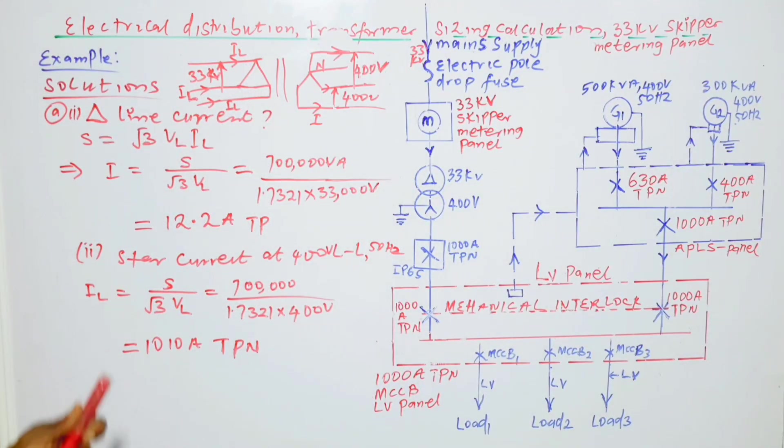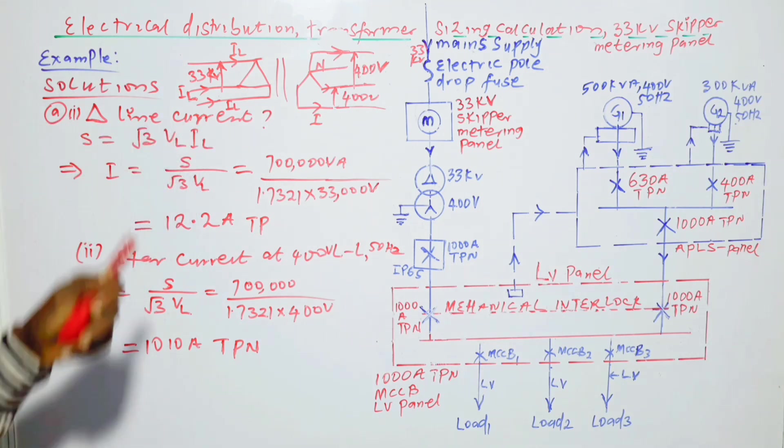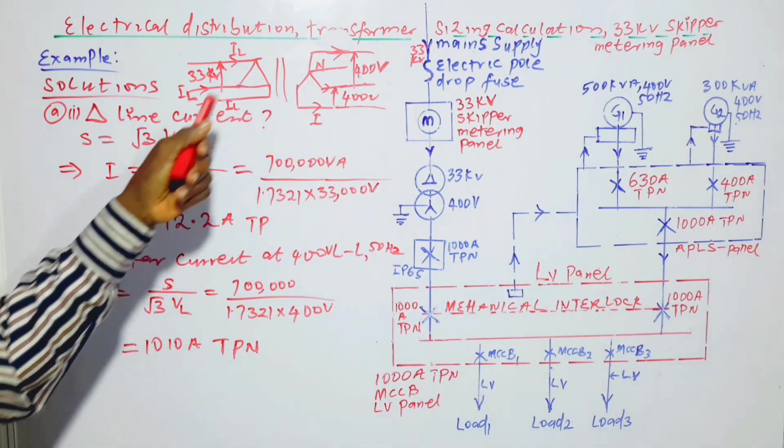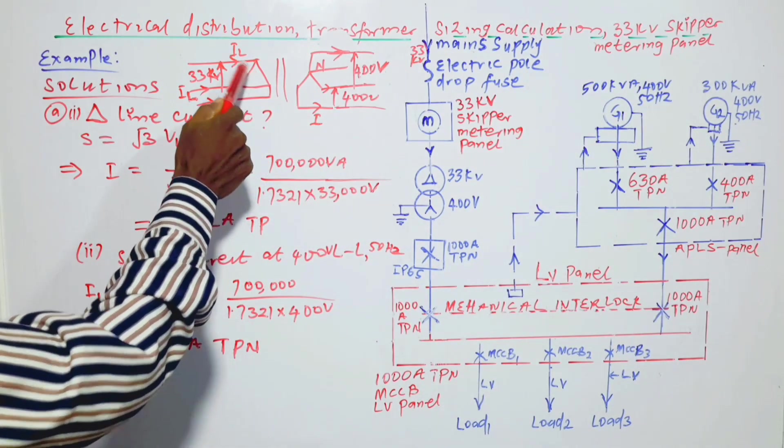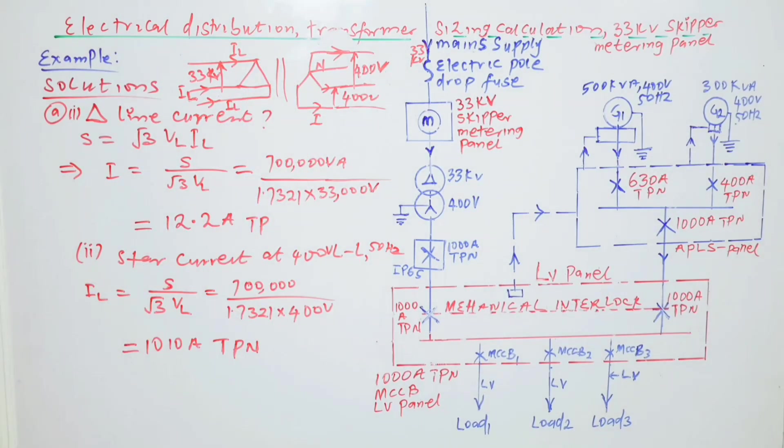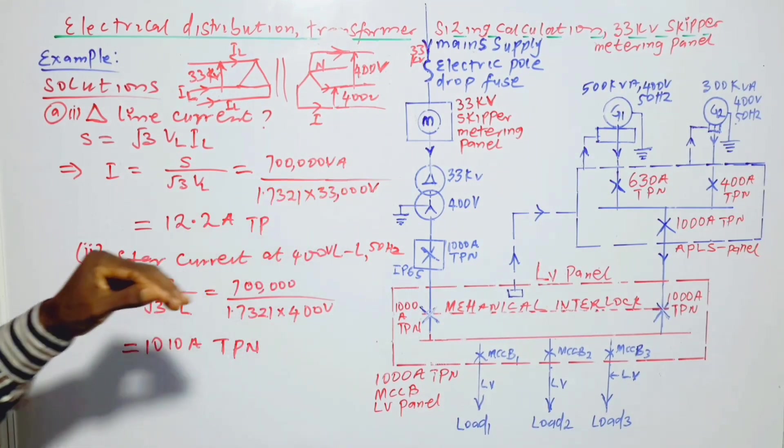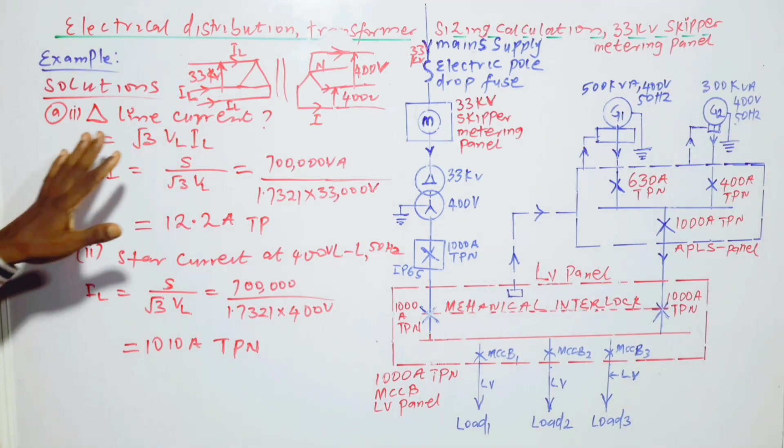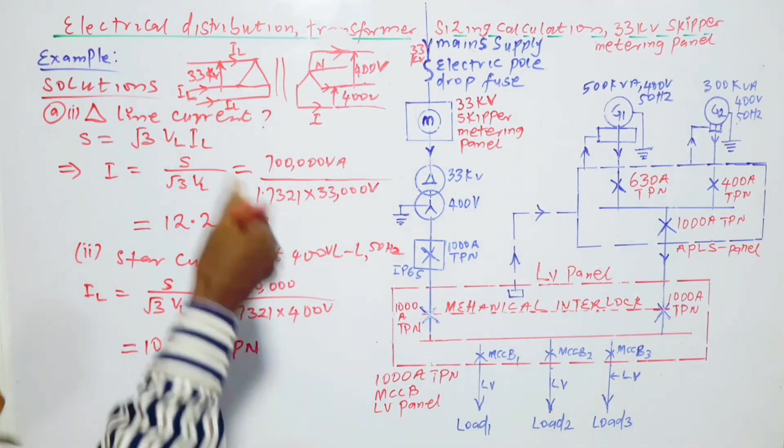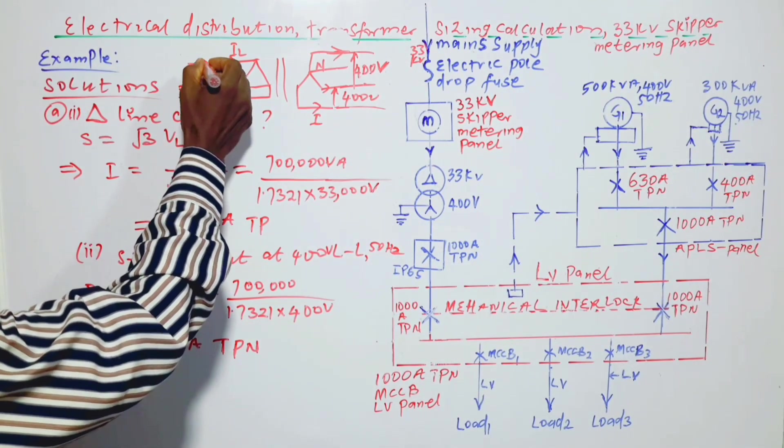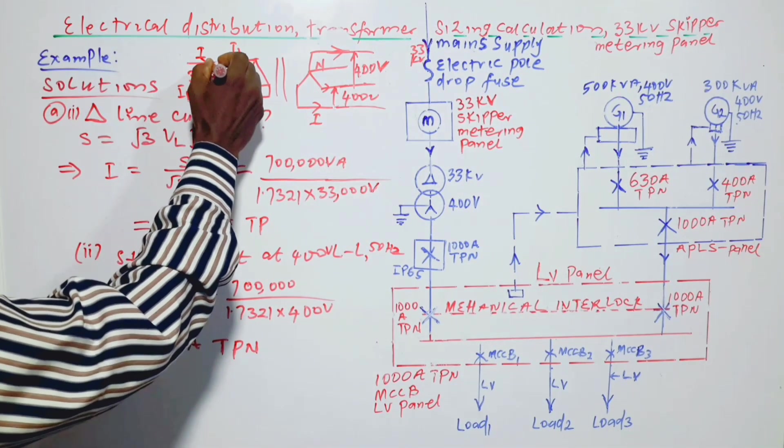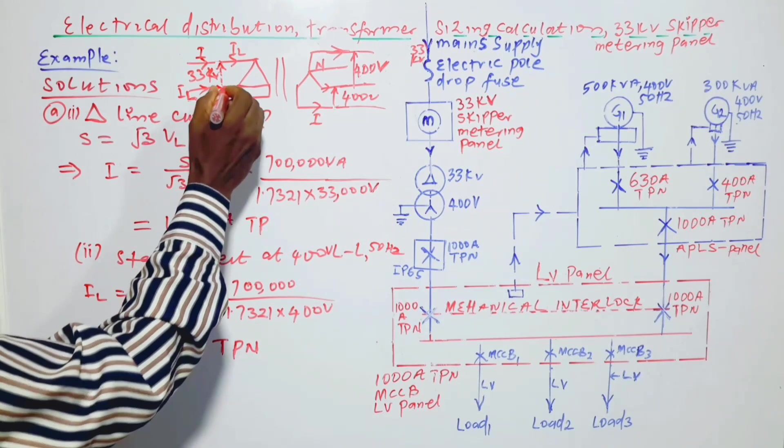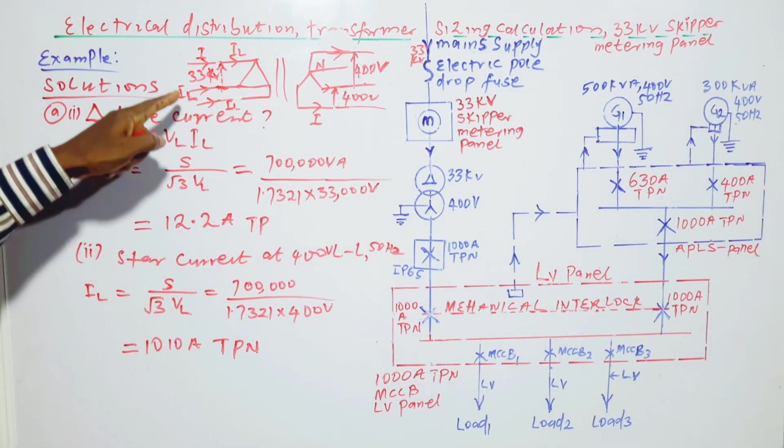Now, the solutions to the problems. Part A first part, delta line current. We can make use of this simple diagram here. This is the delta, and this is the star. Even though we have not reached the stage of transformer, but we have to calculate the delta line current. This is the current. It is the same for the three lines.